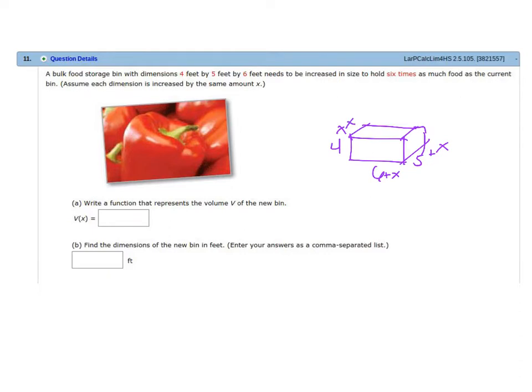So write a function that represents the volume v of the new bin. So that is just going to be 4 plus x, 6 plus x, and 5 plus x. Or you could rewrite that and you could put the variables first, which is totally fine. It just depends on how the computer will take it. But let's just change it and make it like how the computer would like to see it. So let's just say x plus 4 times x plus 5 times x plus 6.